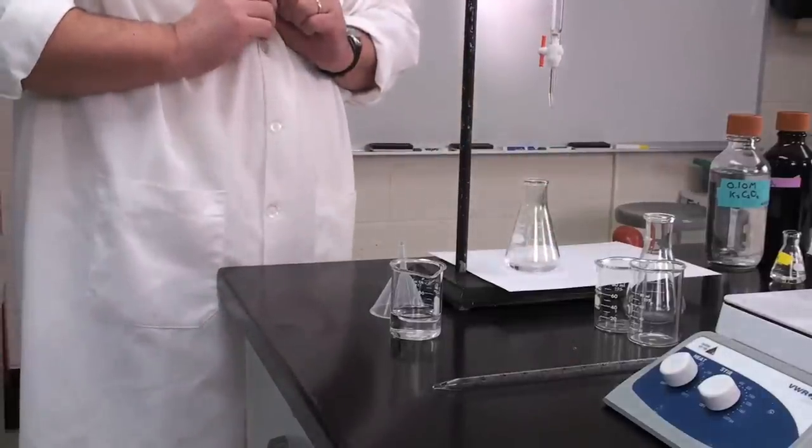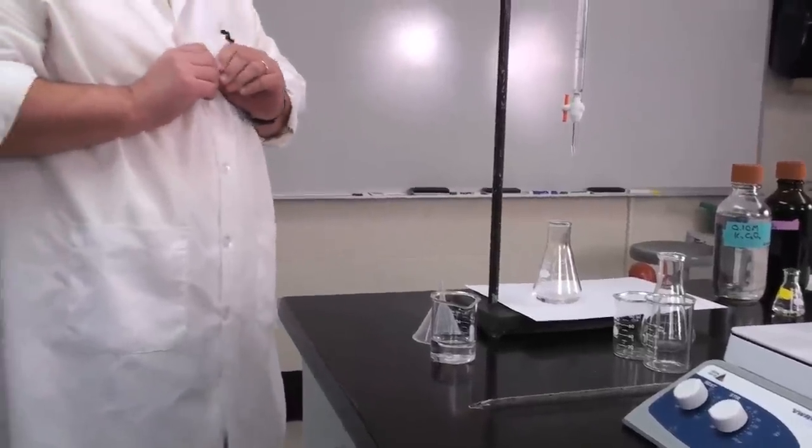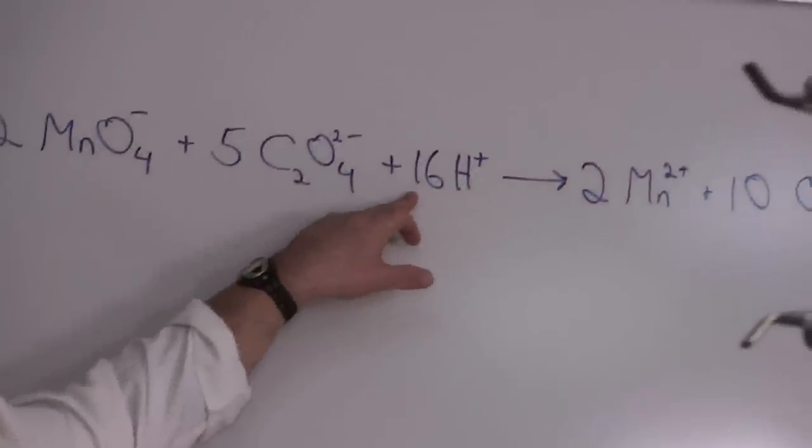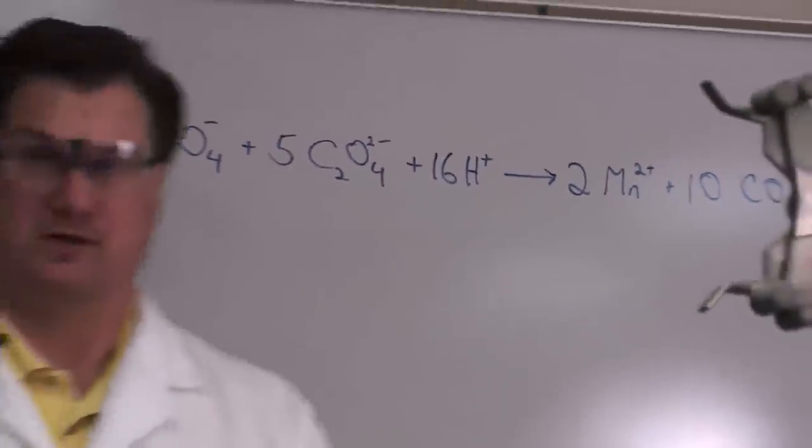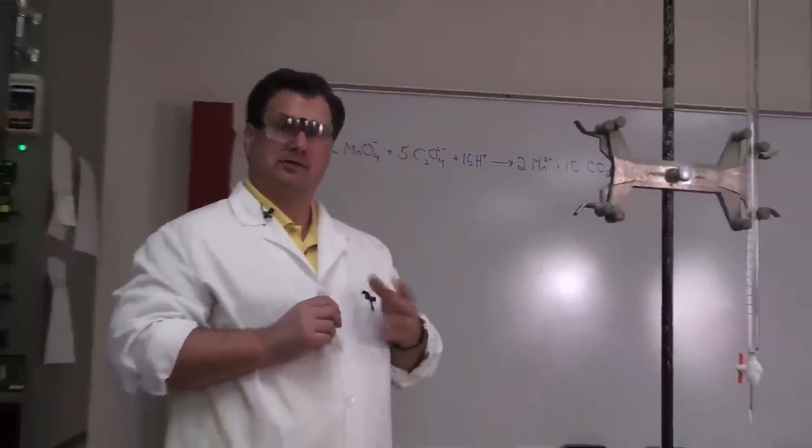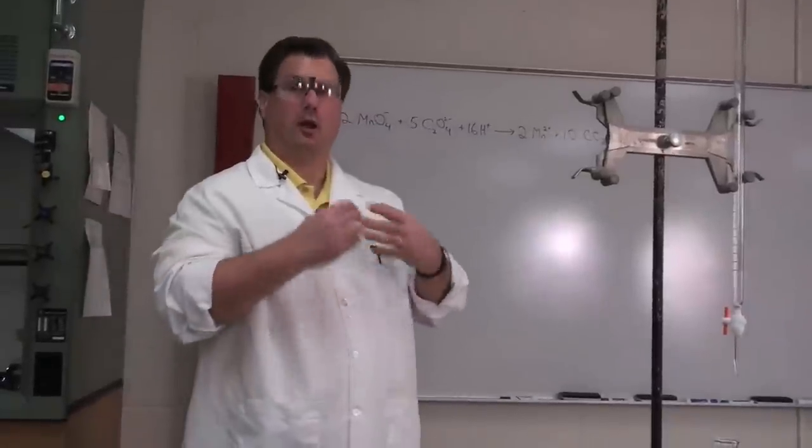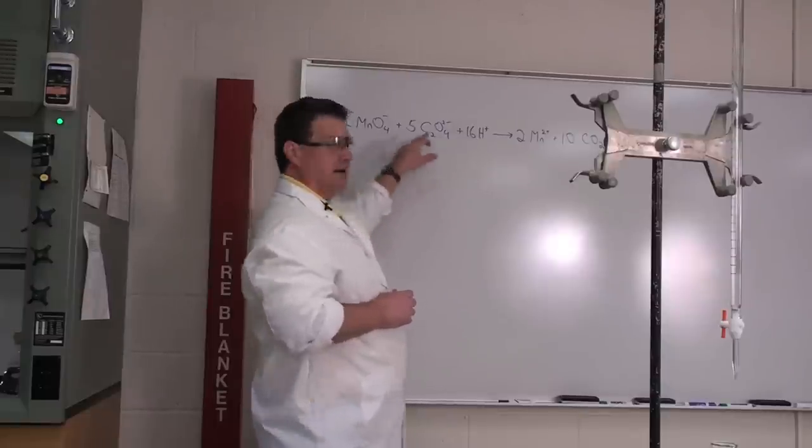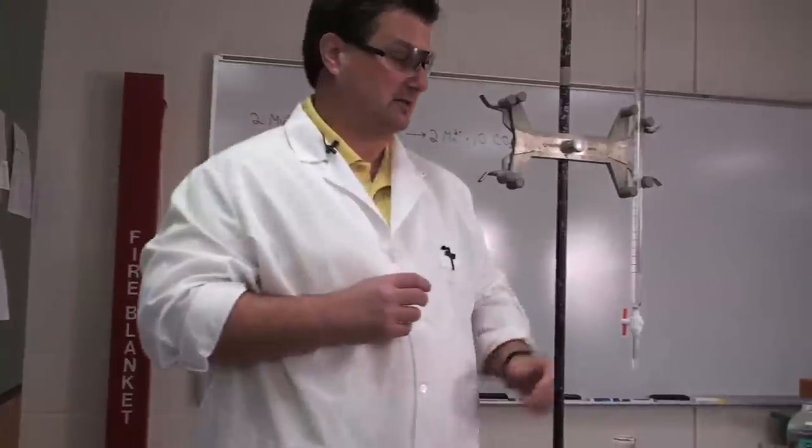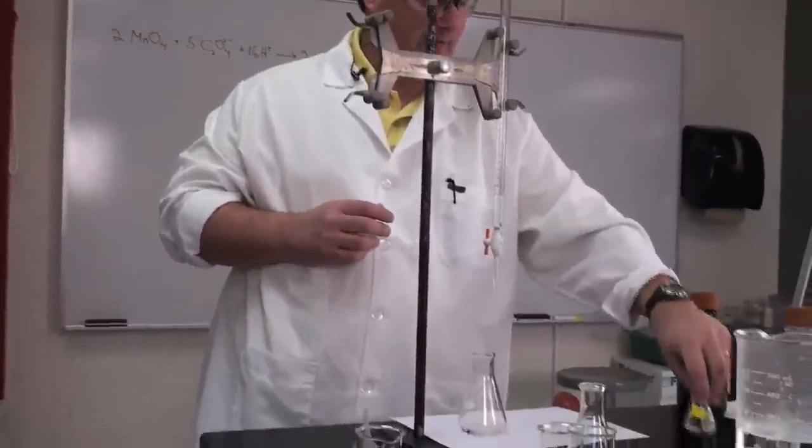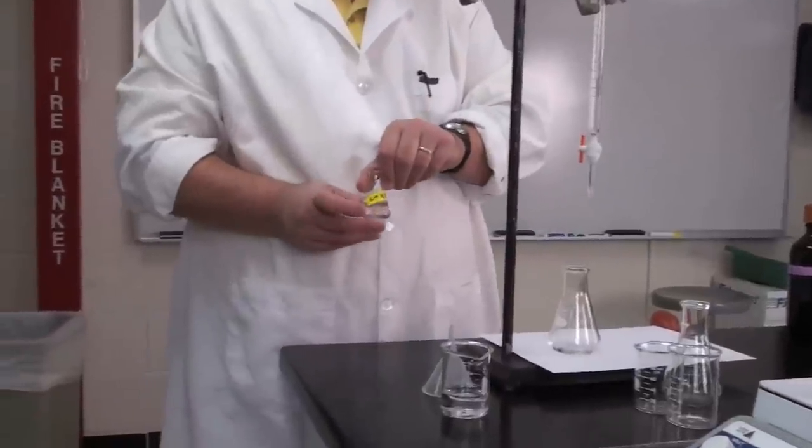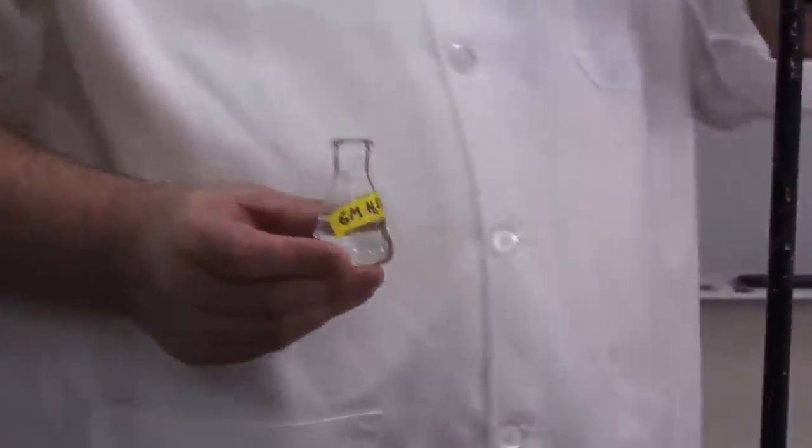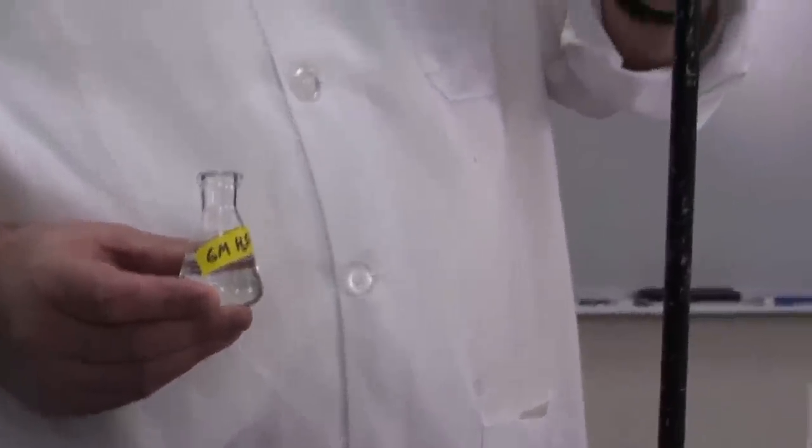Notice that in our balanced chemical reaction, the reaction requires acid—hydrogen ion. So I've got to put some in there. Our goal is not a precise amount—we just want a large excess because it takes 16 hydrogen ions for every 2 permanganates and 5 oxalates. I have made up a 6 molar sulfuric acid solution and I'm going to put about a milliliter into my reaction using this small disposable transfer pipette.